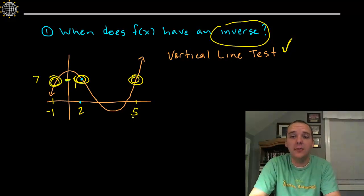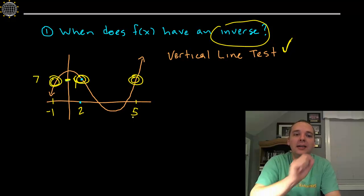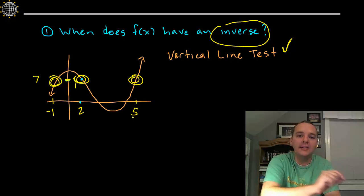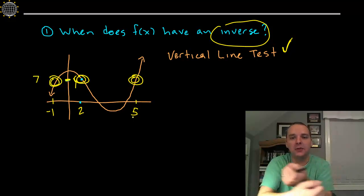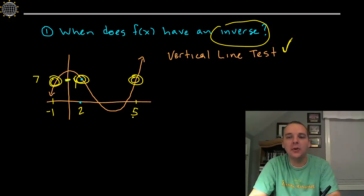That's totally fine, and it would be a function, but what would happen with the inverse relationship? Then you would have the point (7, -1), and (7, 2), and (7, 5), after you swap them, and that's a no-no.